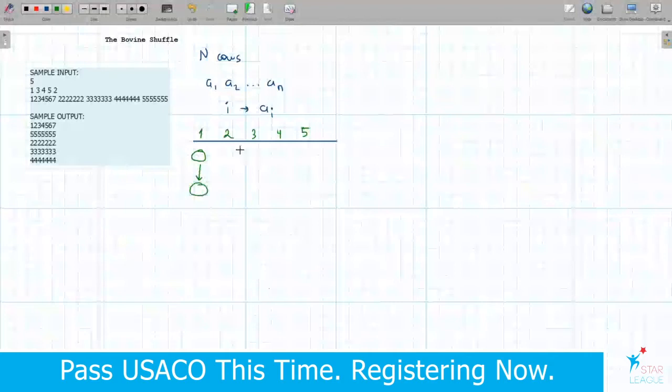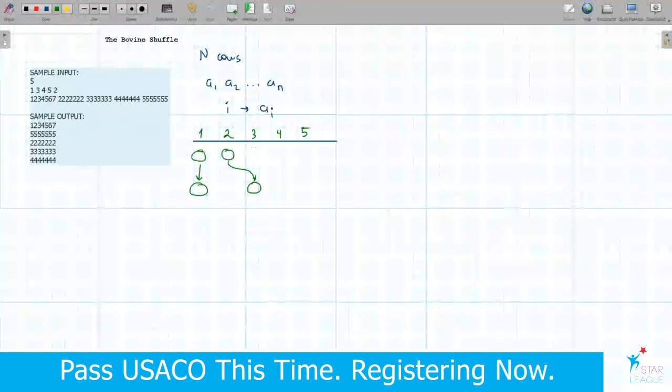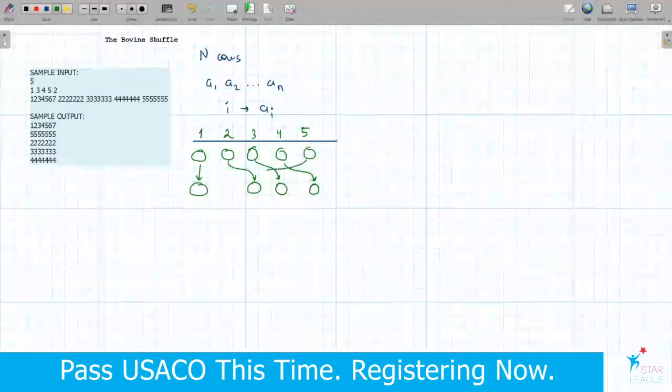And the cow in position 2 will move to position 3, so the cow standing here in position 2 will change its position to position 3, like this. Then cow 3 is going to position 4. And cow 4 goes to 5. And cow 5 goes to position 2, so this cow will go to the empty position here.